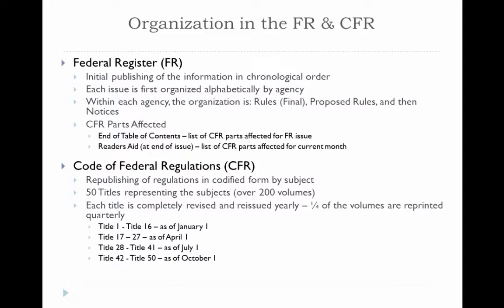The Code of Federal Regulations is a republishing of the regulations after they've already been published in final form in the Federal Register. They are codified and put into subjects. There are 50 titles within the Code of Federal Regulations representing the various subjects, and there are about 200 volumes. Each title of the Code of Federal Regulations is revised and reissued on an annual basis, done in different titles at different times throughout the year. For instance, Title 20 would be revised and reissued as of April 1st.